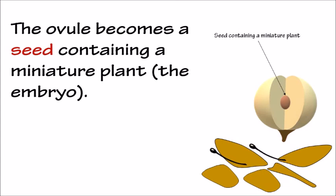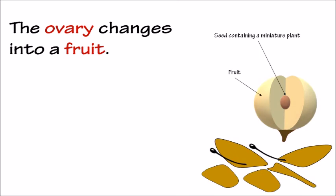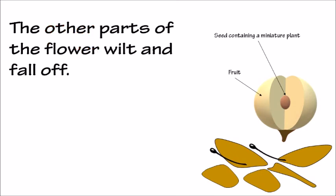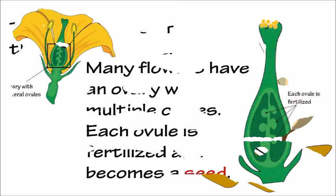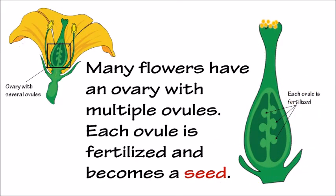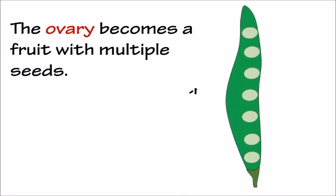The ovule becomes a seed containing a miniature plant, the embryo. The ovary changes into a fruit. The other parts of the flower wilt and fall off. Many flowers have an ovary with multiple ovules. Each ovule is fertilized and becomes a seed, and the ovary becomes a fruit with multiple seeds.